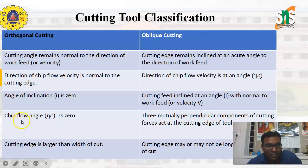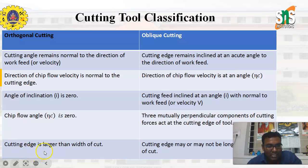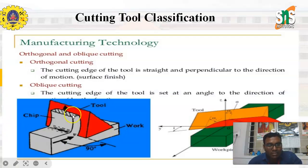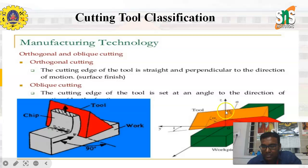In orthogonal cutting, the chip flow angle is 0, whereas in oblique cutting, 3 mutually perpendicular components of cutting forces act at the cutting edge of the tool. The cutting edge is larger than the width of the cut in orthogonal cutting, whereas in oblique cutting the cutting edge may or may not be longer than the width of the cut. The first diagram shows the example of orthogonal cutting and the second diagram shows the example of oblique cutting during the machining process.